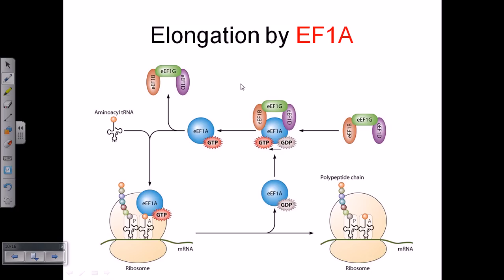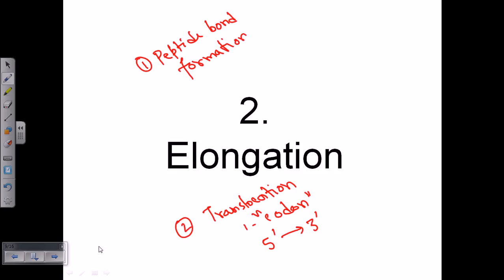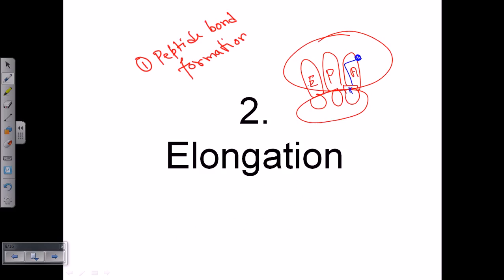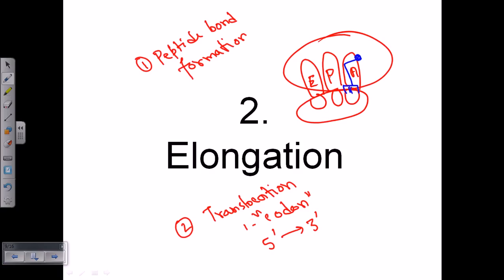The first stage of the elongation process — peptide bond formation — is very similar to prokaryotic elongation. In the ribosome, if we draw the large subunit and small subunit, there are three different sites: the E site, the P site, and the A site. We have one tRNA placed at the A site and another tRNA placed at the P site. The tRNA at the P site will transfer its amino acid to the tRNA present at the A site.